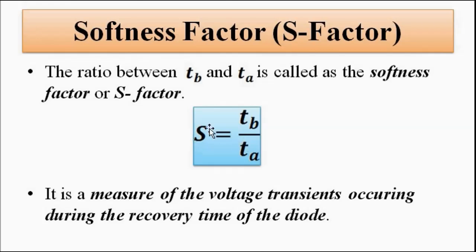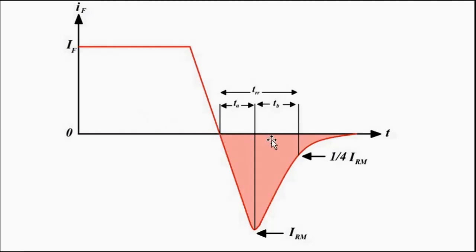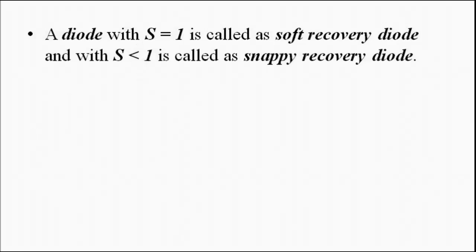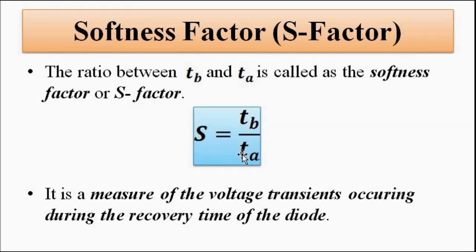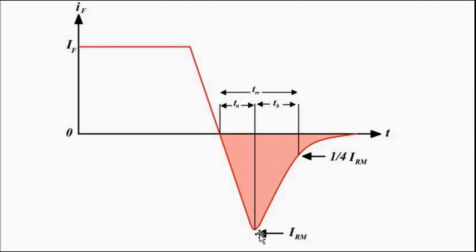A softness factor equal to 1 means t_b and t_a are equal — the time during which the diode current increased from zero to I_RM in the reverse direction is the same as the time during which the current fell from I_RM to 25% of I_RM. A softness factor less than 1 means t_b is less than t_a, so the current rose from zero to I_RM over a longer time than it took to fall from I_RM to one-quarter of I_RM.